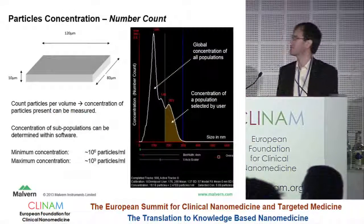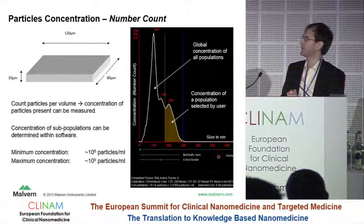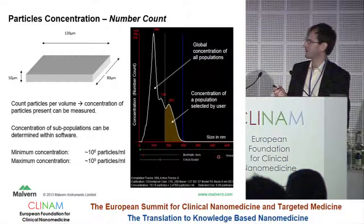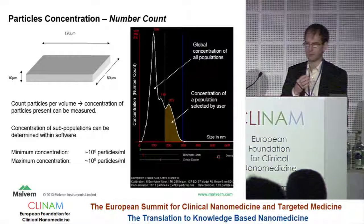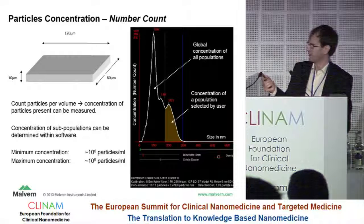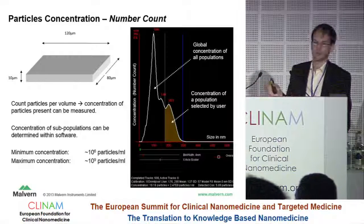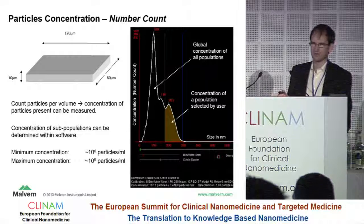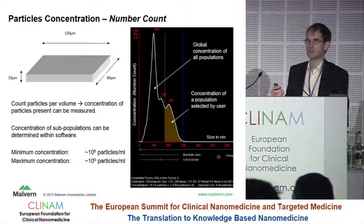In terms of concentration, we effectively count the number of particles within a certain volume, and that gives you very directly a concentration measurement. You can count within a certain range — a sub-population — so you can ask what's the concentration of particles between size A and size B. In terms of specification, we have a minimum concentration of around 10 to the 6 particles per ml, and a maximum concentration of roughly 10 to the 9 particles per ml. Most researchers don't really work in these units, but virtually all users will be diluting their samples significantly.